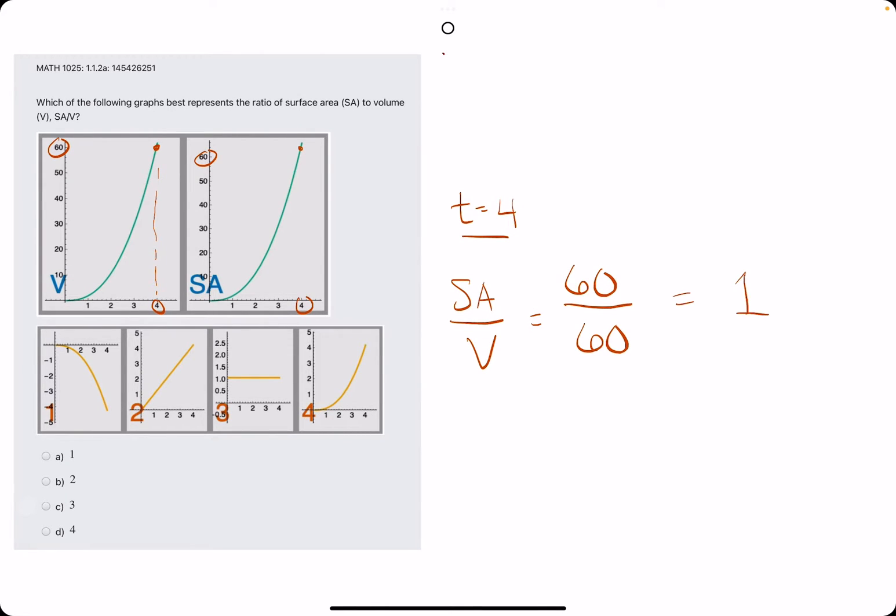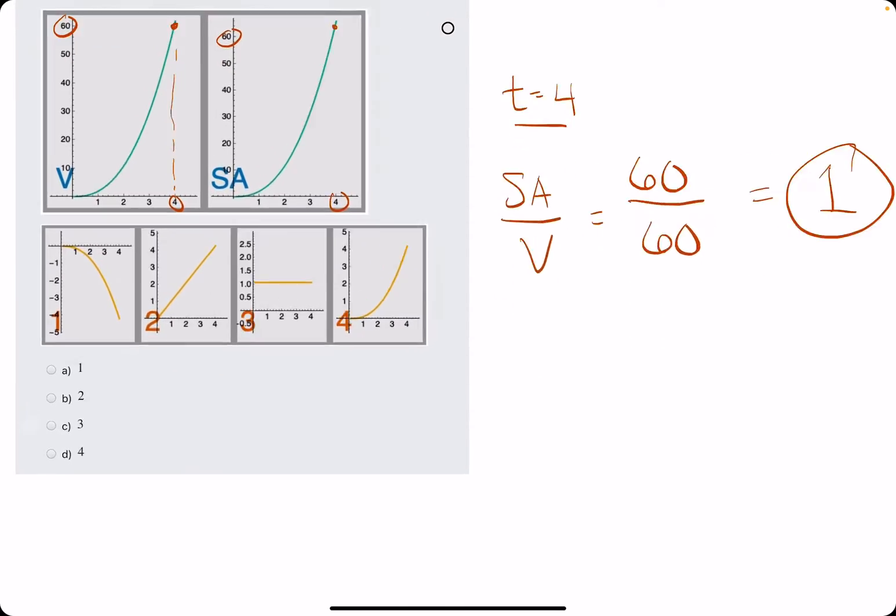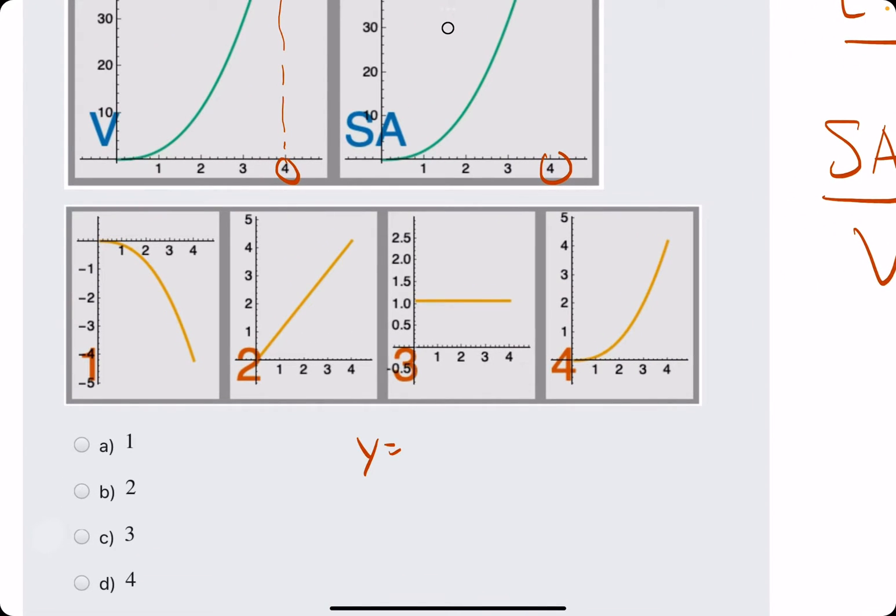60 over 60 equals 1. So that says we're looking for a y value of 1 at time 4.